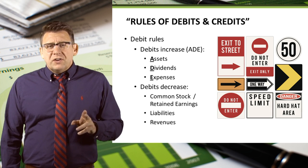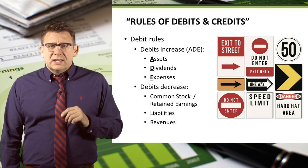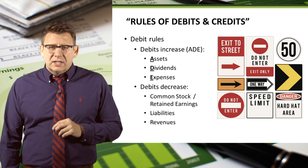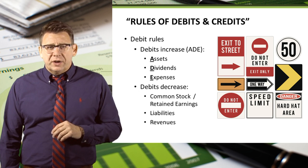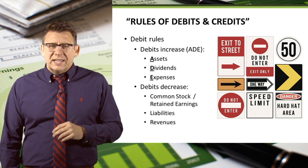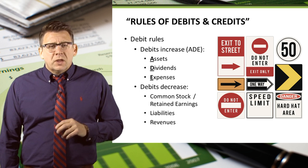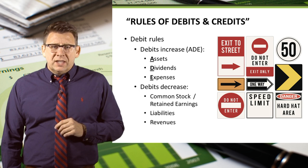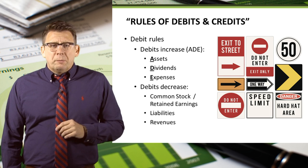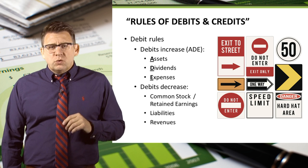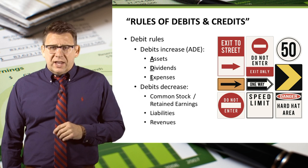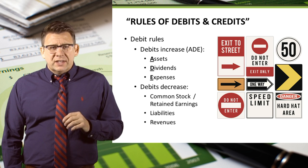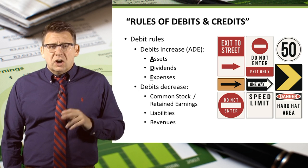The debit rules are as follows: assets, dividends, and expenses are all increased by debits. I remember this with the acronym AID — debits increase AID. The normal balance is the balance we would expect to see in an account, and the normal balance is always what increases the account. So the normal balance for assets, dividends, and expenses are debit balances.